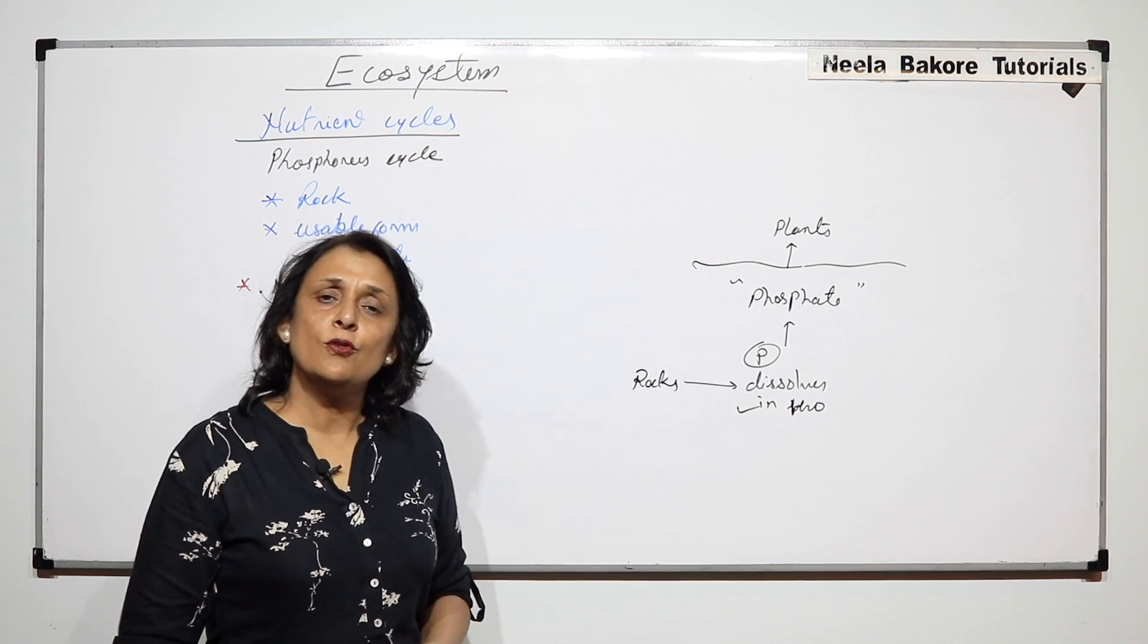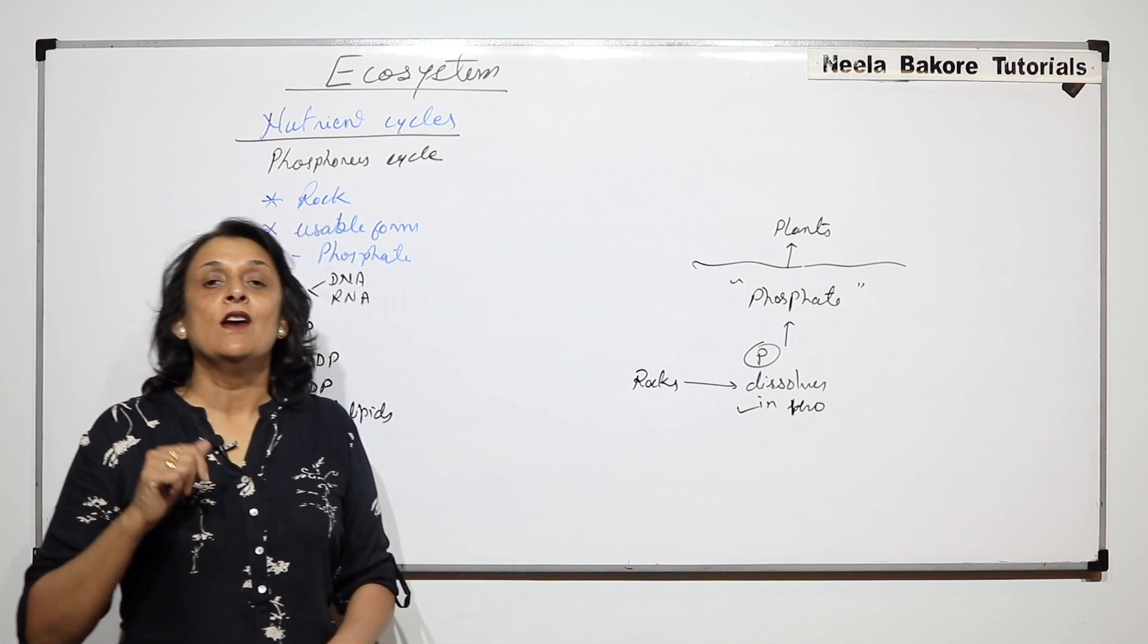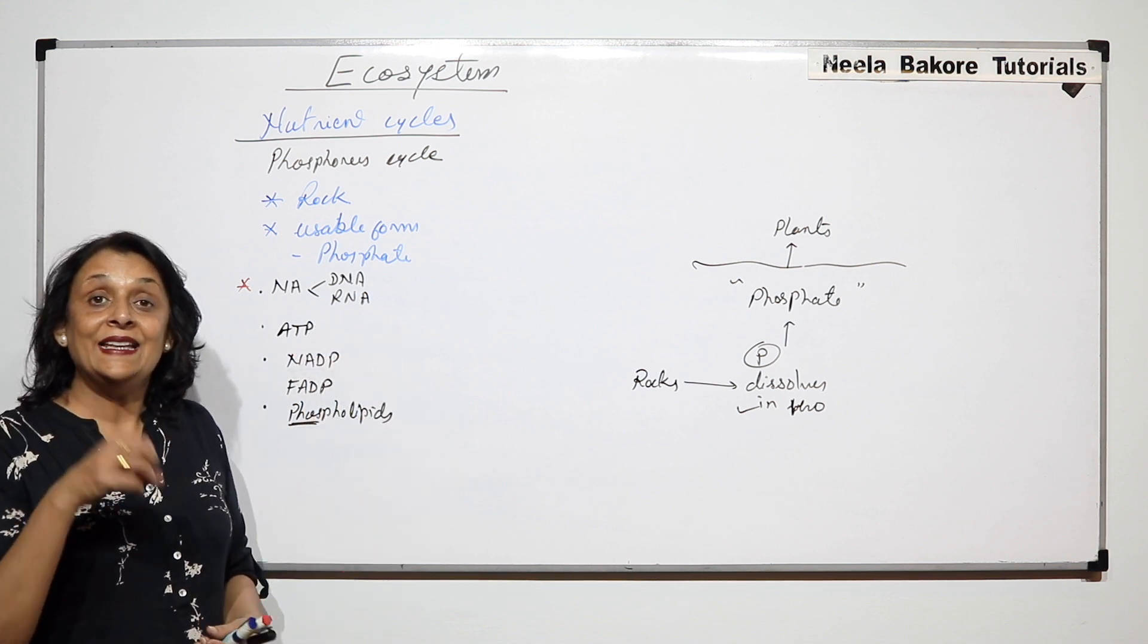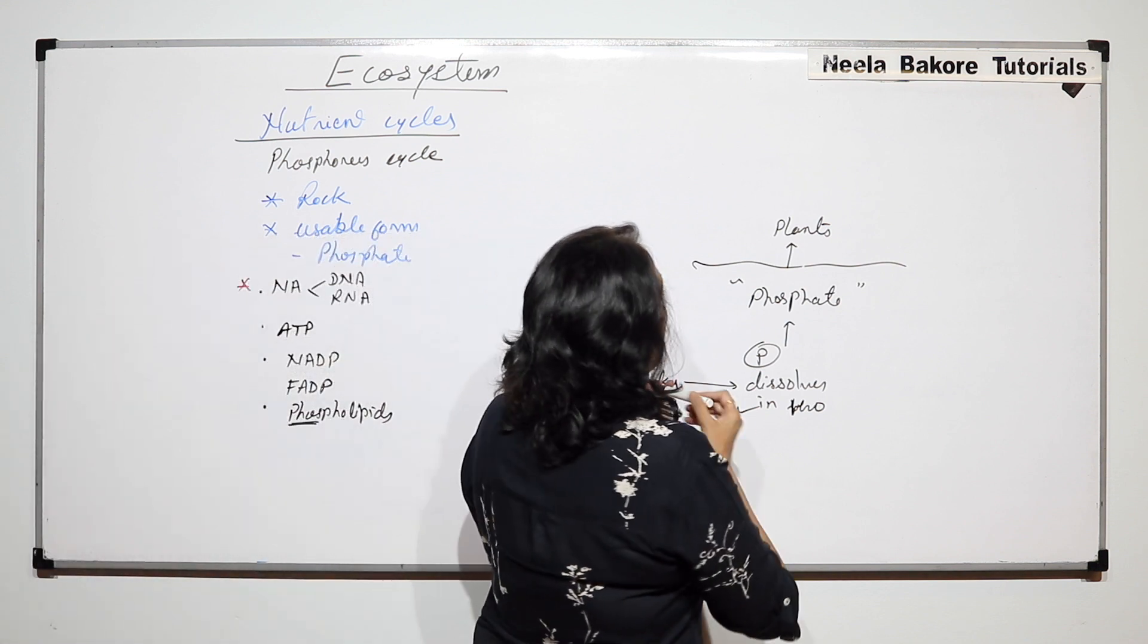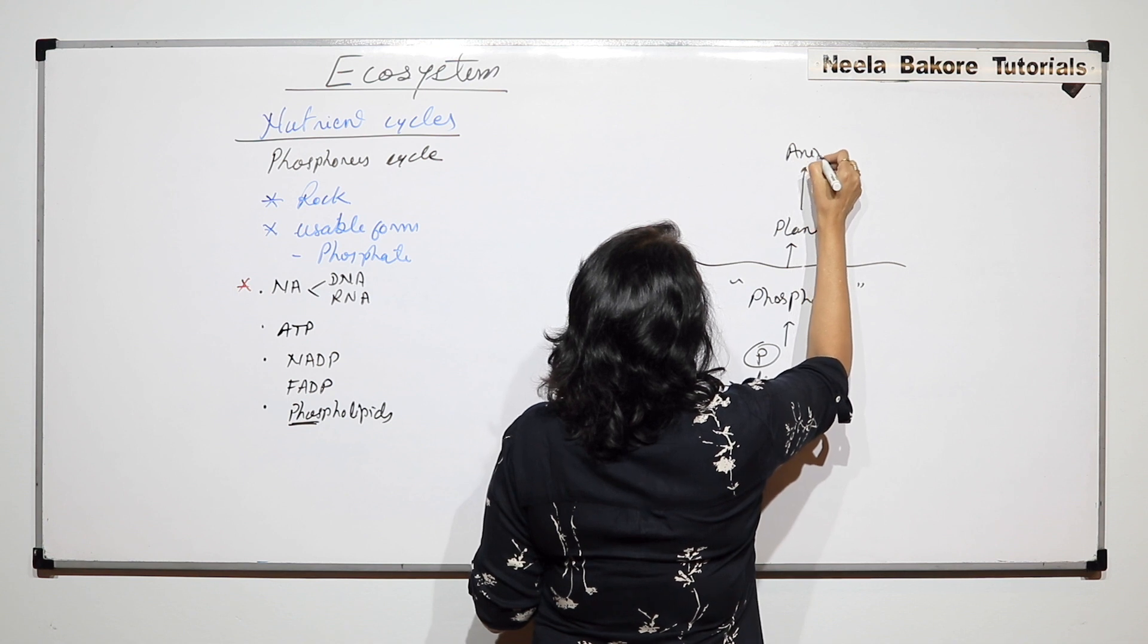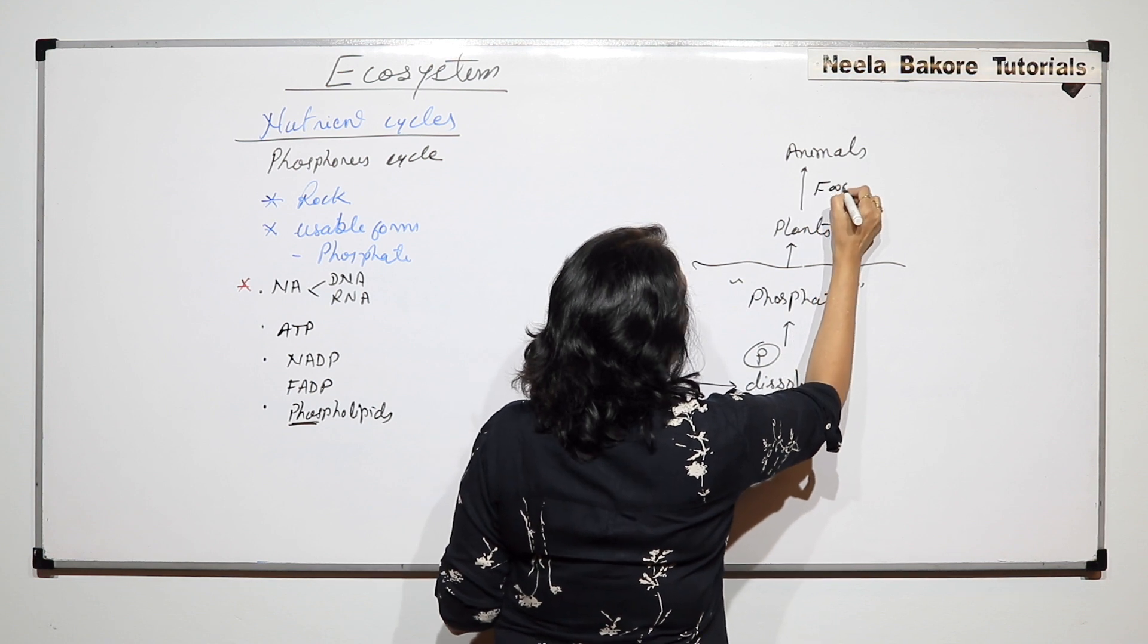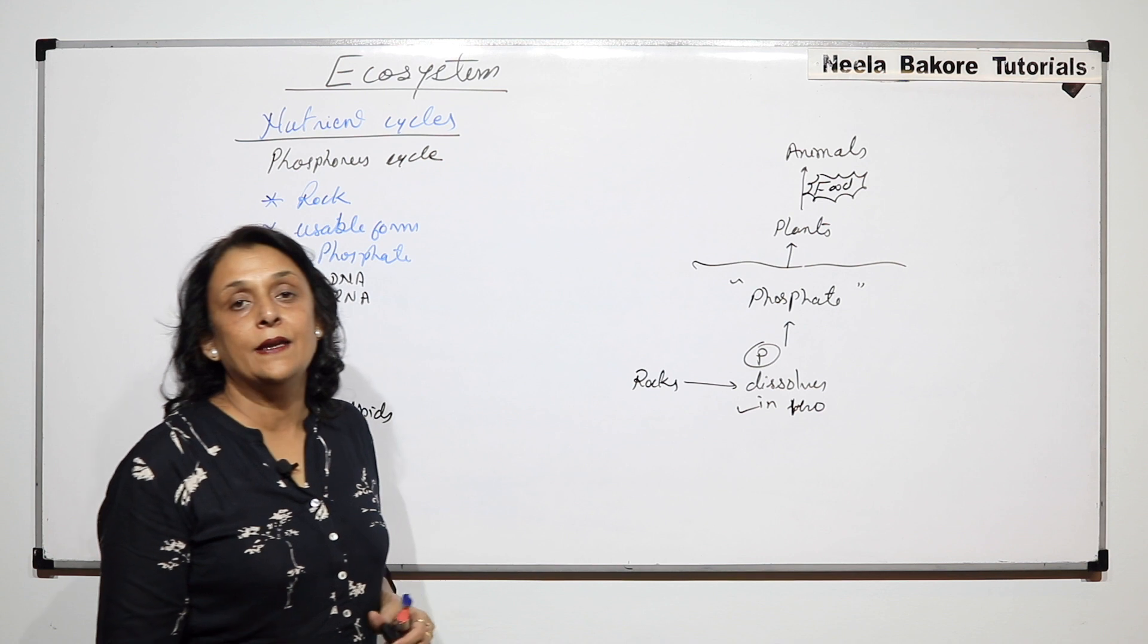From here it reaches the plants. Plants are going to use this phosphate to make their plasma membrane, for their cell division, for their active processes, for their enzymatic activities, and this phosphate becomes a part of the plant body. From the plants it is going to move into the animals in the form of food.